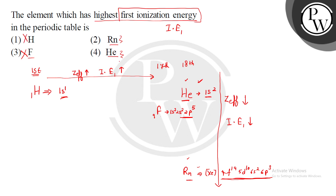If we look at radon and helium, going down the group, the size increases. The number of shells increases, so the nuclear pull decreases. Due to that, you get a lower value of ionization energy for radon. So the first ionization energy of radon will be lesser than helium. Therefore, the highest first ionization energy belongs to helium.